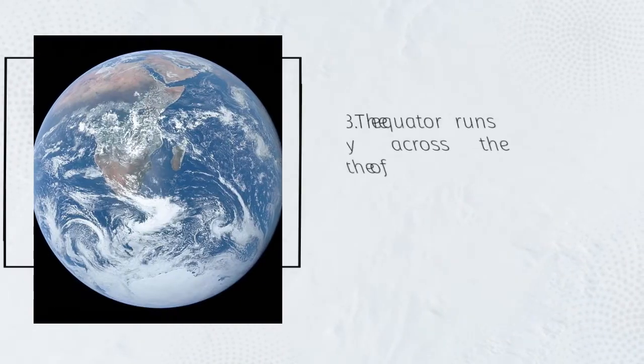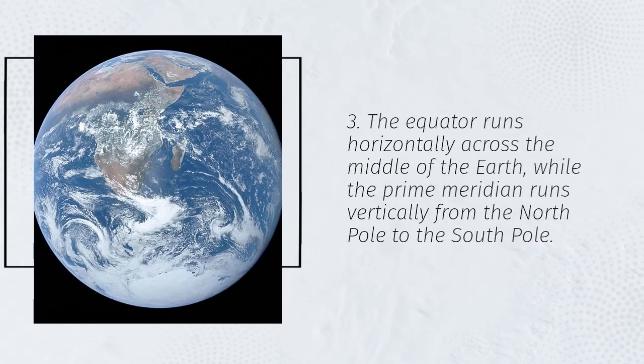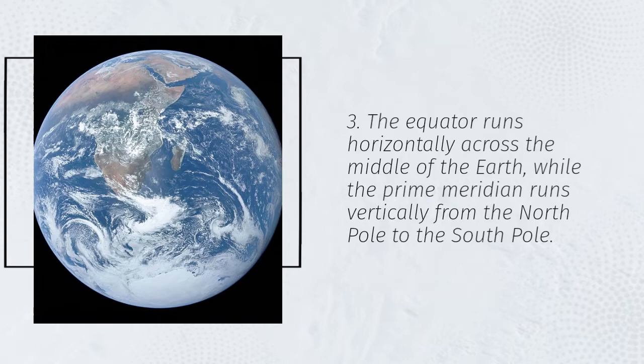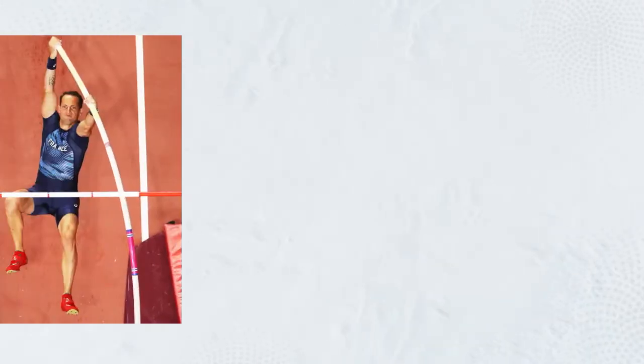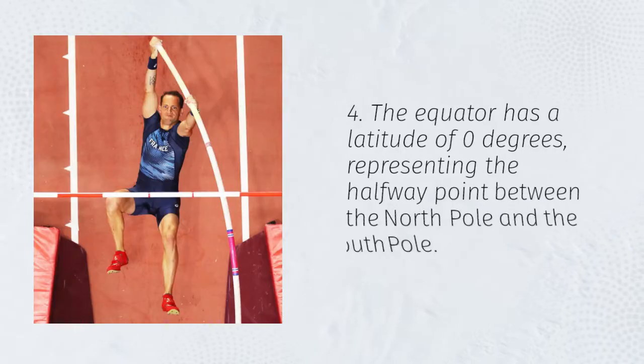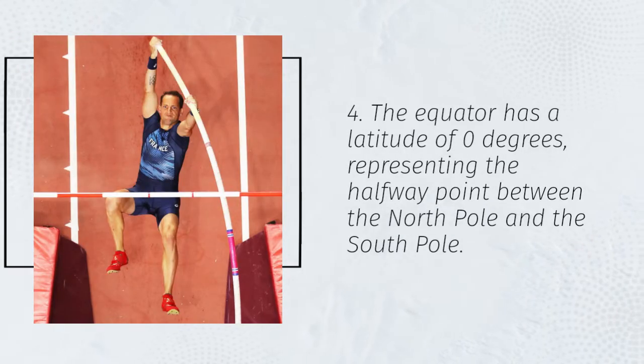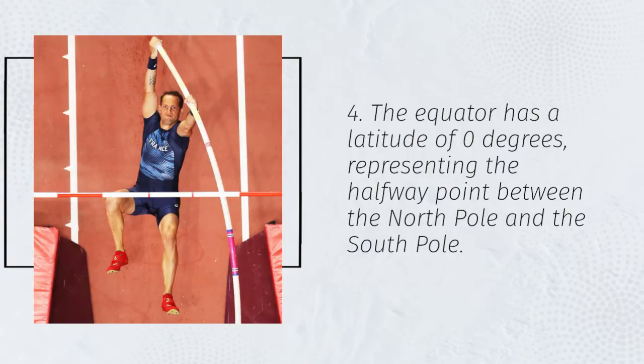3. The equator runs horizontally across the middle of the Earth, while the prime meridian runs vertically from the North Pole to the South Pole. 4. The equator has a latitude of zero degrees, representing the halfway point between the North Pole and the South Pole.